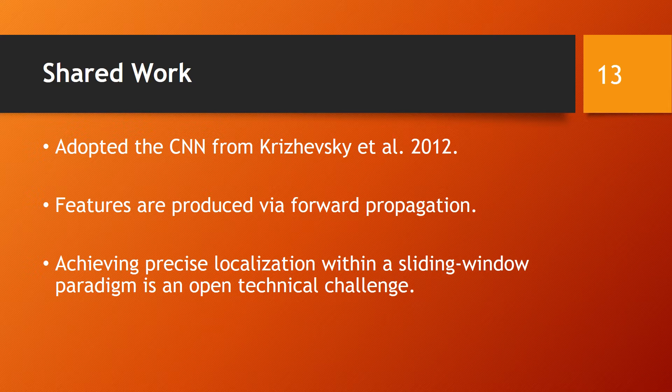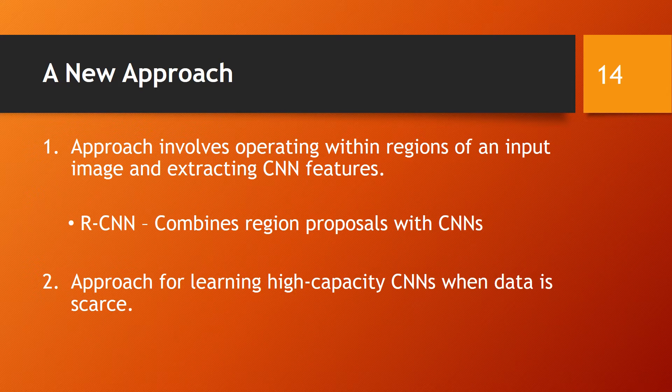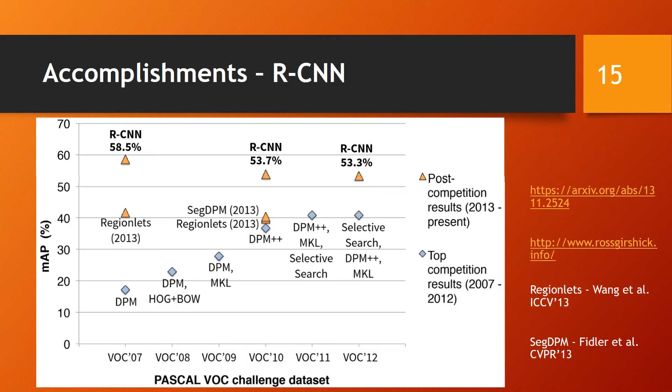It produces features via forward propagating a mean-subtracted RGB image through five convolutional layers and two fully connected layers. The authors' approach is new in the way that it extracts CNN features within regions of an input image. This approach is appropriately termed RCNN. Furthermore, the authors offer an effective approach for learning high-capacity CNNs when there is insufficient label data. The proposed RCNN object detection algorithm outperforms all existing methods on the Pascal VOC and ImageNet datasets.